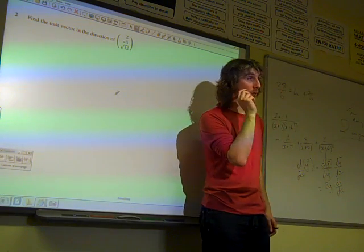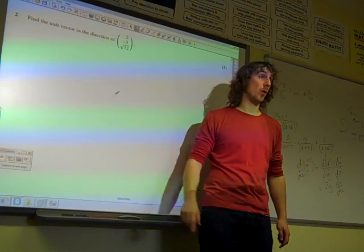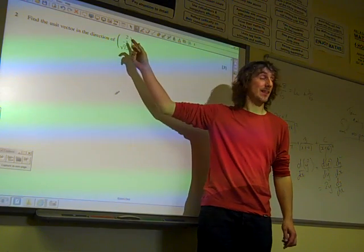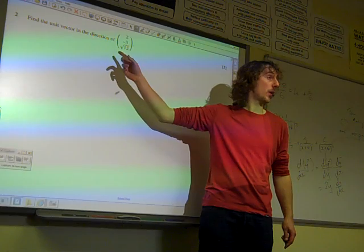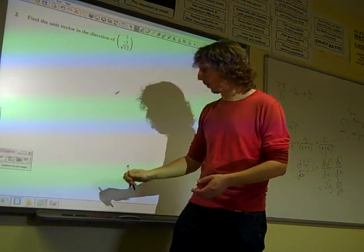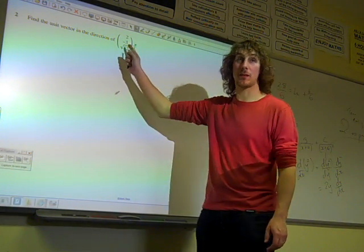So if we're going to find the vector of length 1 unit that's similar to that one, we need to know how many units that one is first, don't we? So the first thing to do is to find the length of that vector.